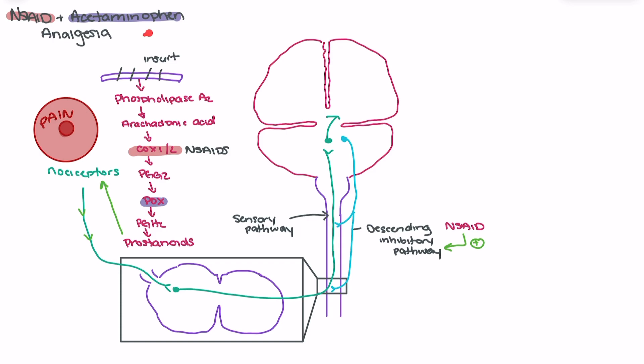When we're looking at acetaminophen, it's actually blocking the POX-2 pathway, which is lower down in the process and has a similar effect in reducing the production of prostanoids, which then reduces the amount of nociceptor stimulation that we see.